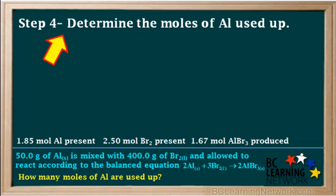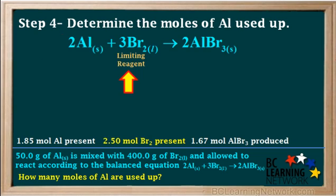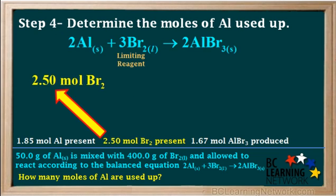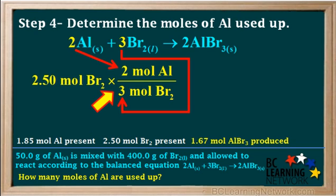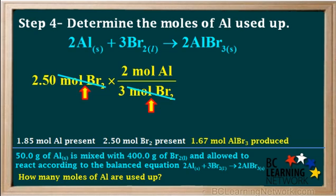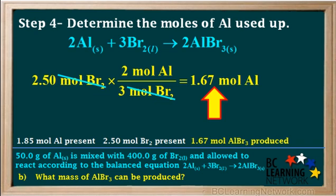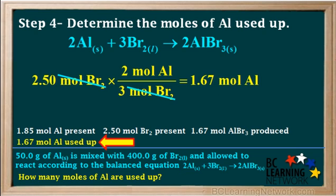Now we calculate how many moles of aluminum are actually used up in this reaction. Again, we must start with the limiting reagent, Br2. We write 2.5 moles of Br2 and multiply by the mole ratio 2 moles Al to 3 moles Br2. Canceling out the moles of bromine, we get 1.67 moles of aluminum are used up.